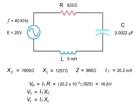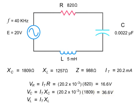For the capacitor, it would be 20.2 milliamps times 1,809 ohms, or 36.6 volts. And the inductor voltage would be 20.2 milliamps times 1,257 ohms, or 25.4 volts.